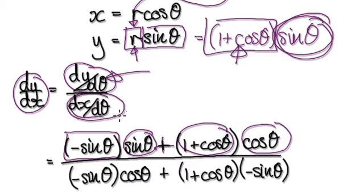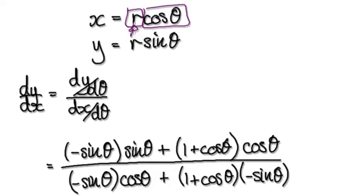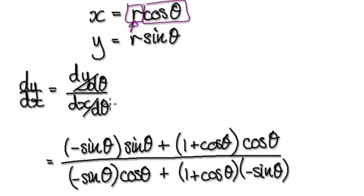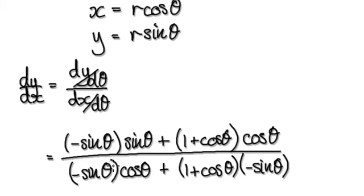Now we need to find dx by dθ. Looking at dx by dθ — r is a function of theta, so we use the product rule again. Differentiate the first part, leave the second alone, then plus leave the first alone and differentiate cos theta, which gives minus sin theta. So that gives us dx by dθ.